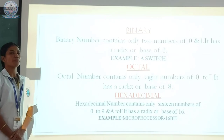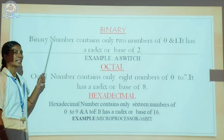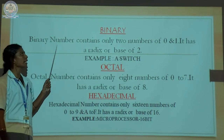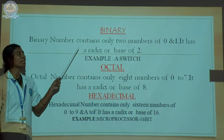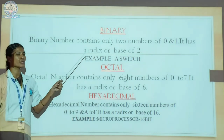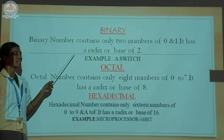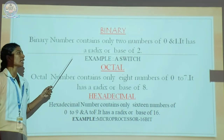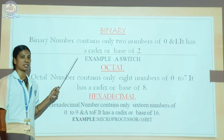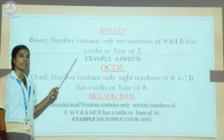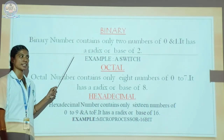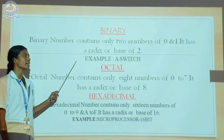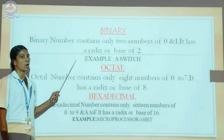What are the types of number system? The first one is binary. The binary number system contains only two numbers — zero and one. It has a radix or base of two. Here the example is a switch. A switch can exist in totally two conditions. The first state is zero. Zero represents the off state; one represents the on state.